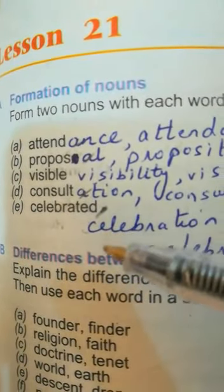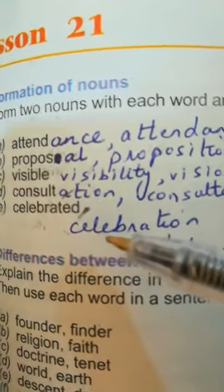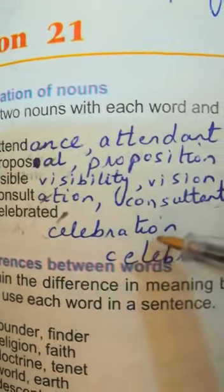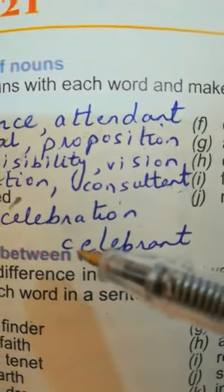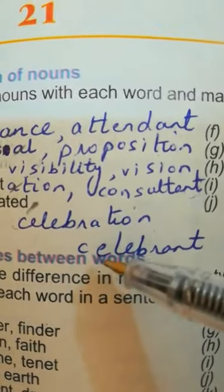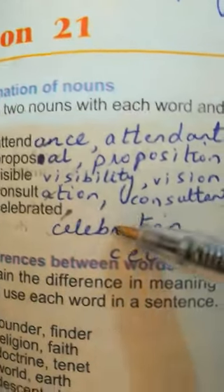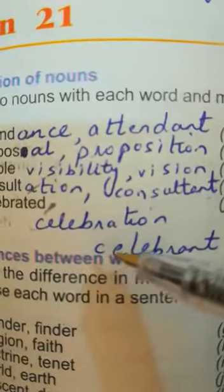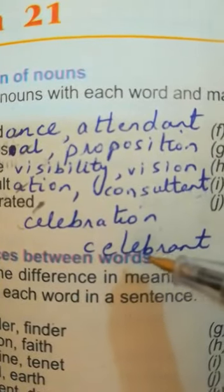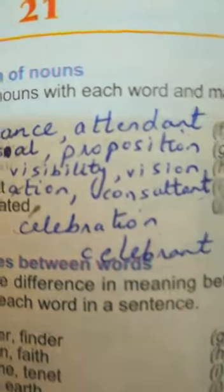Next word is 'celebrated': the noun found from this will be celebration (C-E-L-E-B-R-A-T-I-O-N), and the other noun is celebrant — a person who celebrates something (C-E-L-E-B-R-A-N-T).